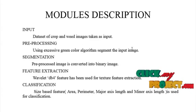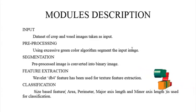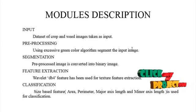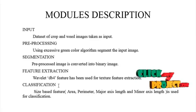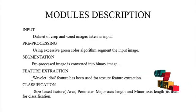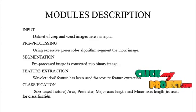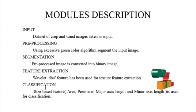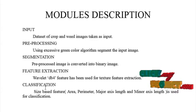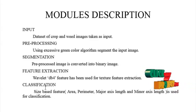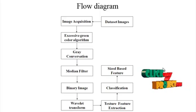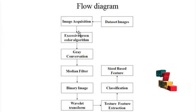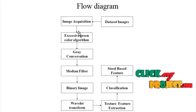The dataset of crop and weed input images is taken. Using the Excessive Green algorithm, the input images are segmented. In the segmentation step, pre-processed images are converted into binary images. In the wavelet extraction, DB4 features are used for texture feature extraction. In the classification process, size-based features — area, perimeter, major axis length, and minor axis length — are used for classification. Finally, crop and weed are classified. The Excessive Green algorithm is mostly dependent on the ExG to perform the process.